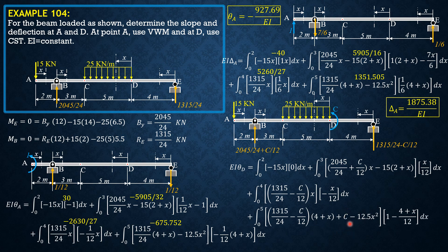The partial derivative: derivative of C is 1, and the derivative of −C/12·(4+x) is −(4+x)/12. Prior to integration, set C = 0. The second integral then becomes (2045/24·x − 15(2+x)) times x/12, and its value is 0.